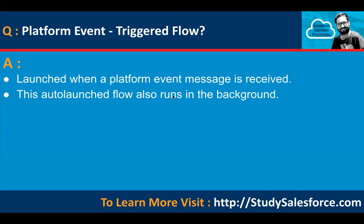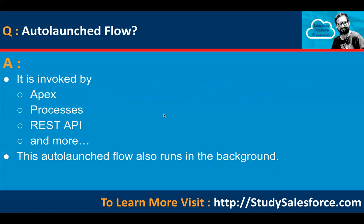Then platform event triggered flow launches when a platform event message is received. This auto-launched flow also runs in the background. Then auto-launched flow — it is invoked by Apex processes, REST API, and more. This auto-launched flow also runs in the background.